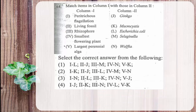The next question is a match-the-following. Column 1 contains: peritrichous flagellation, living fossil, rhizophore, smallest flowering plant, and largest perennial alga.